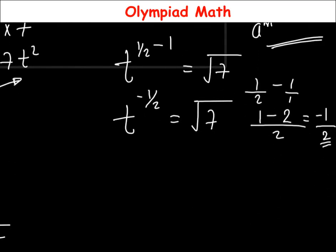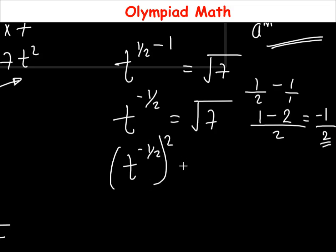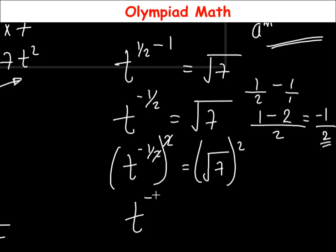Solving further, we eliminate the square root by squaring both sides of the equation. So (t^(−1/2))² equals (√7)². The power becomes −1/2 times 2 equals −1, and the square cancels the square root on the right, leaving 7. So t^(−1) equals 7.